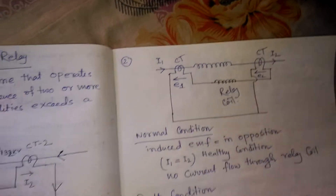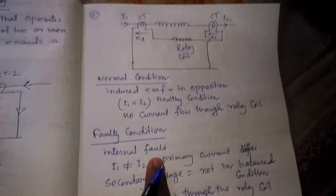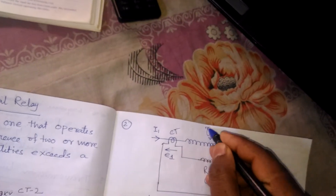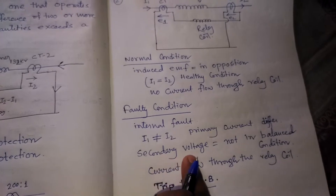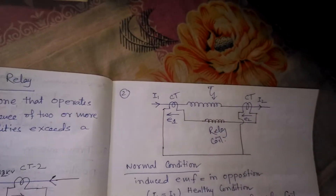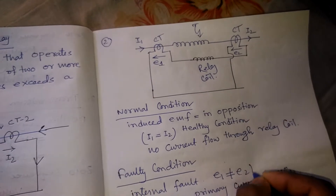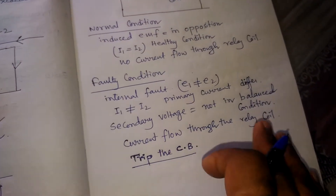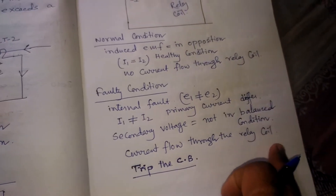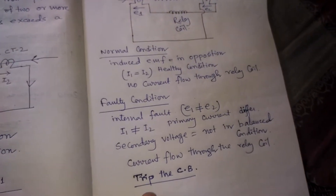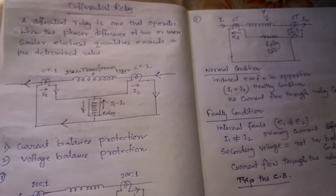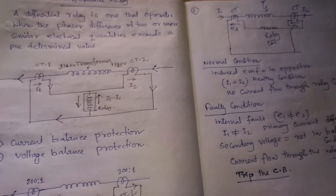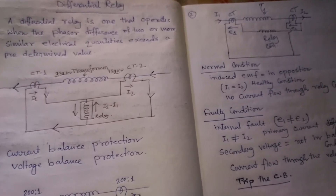In the faulty condition, if any internal fault occurs, I1 is not equal to I2 — the primary current differs from the secondary current. So the secondary voltage is not in balanced condition: E1 is not equal to E2. Current will flow to the relay coil and trip the circuit breaker. Today we discussed the differential relay, which has very important applications in transformers, alternators, etc. Thank you very much.